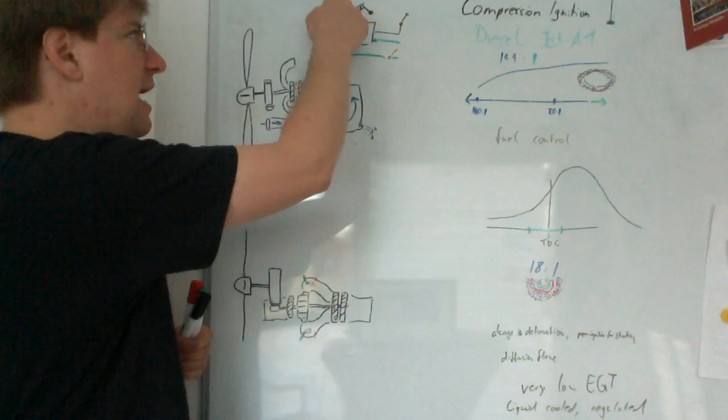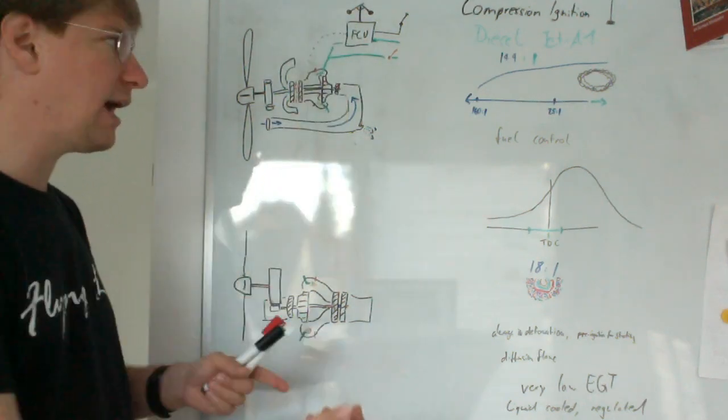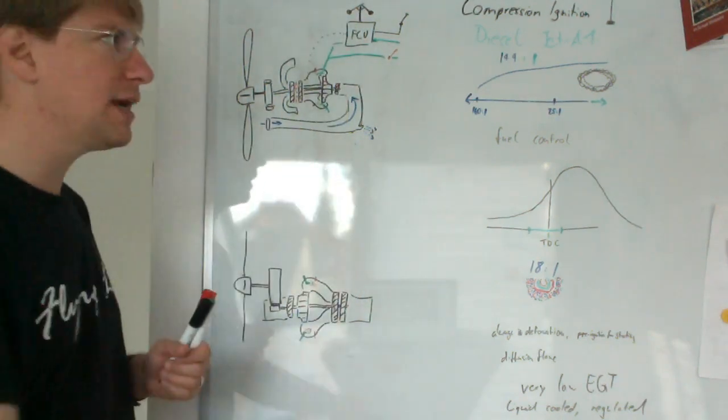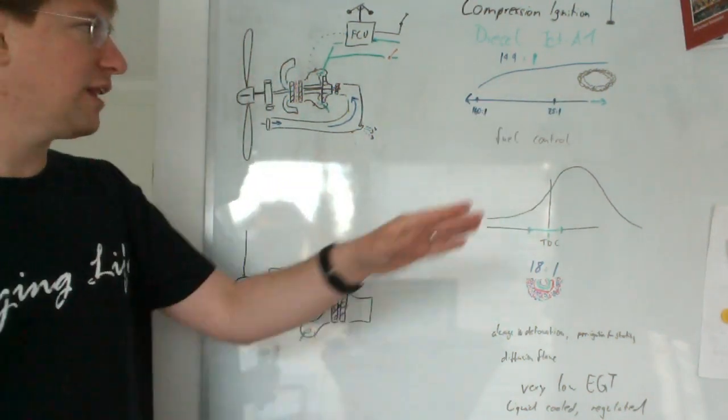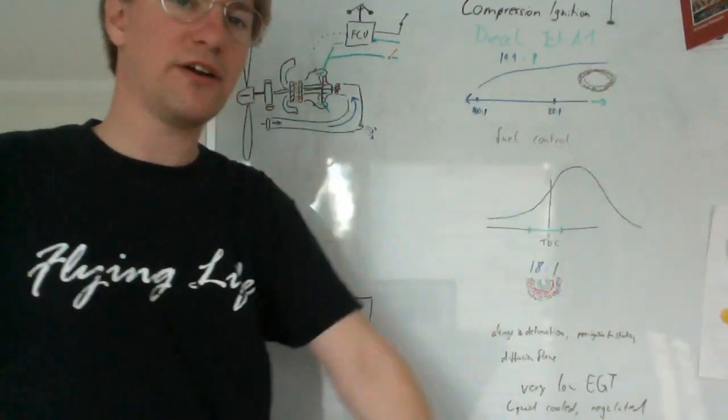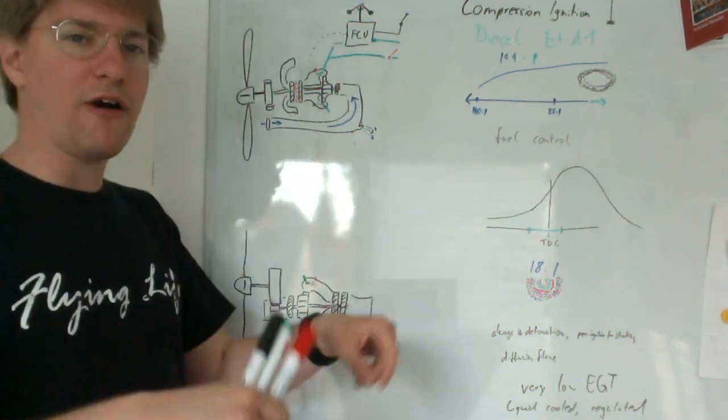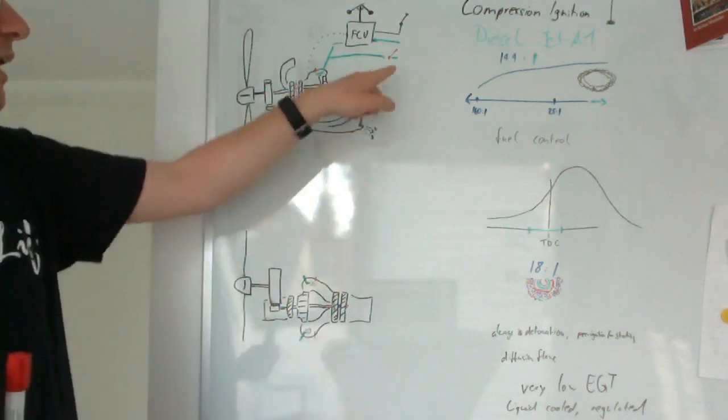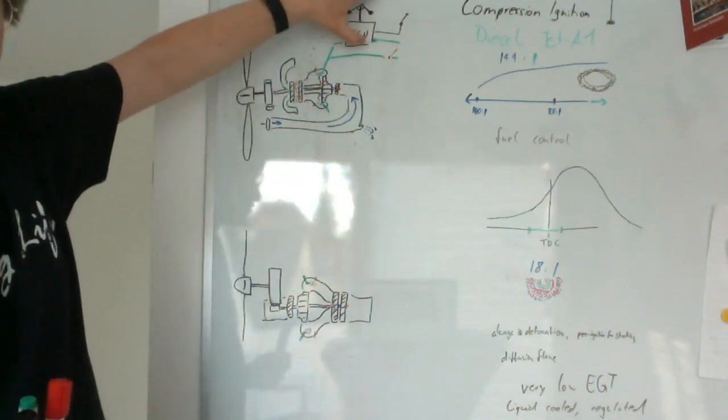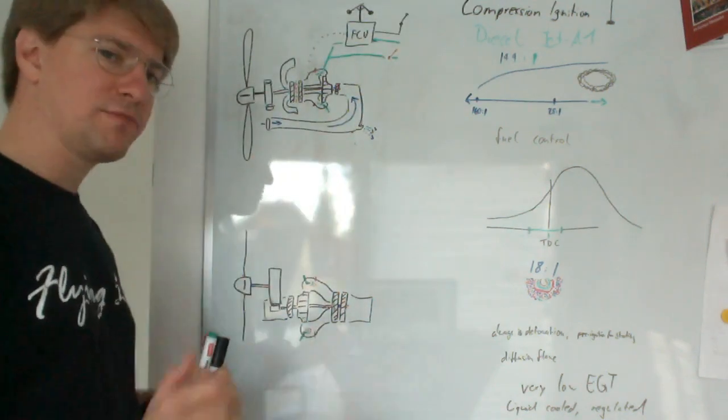When you ask the fuel control unit for a high gas generator RPM, it will transition through this mixture curve, avoiding the super rich areas because it knows how fast the engine is spinning right now and how much fuel it can inject there. If you take the fuel control unit out of the equation by using the emergency power lever, there's no protection as to where you're going to be on the mixture curve.